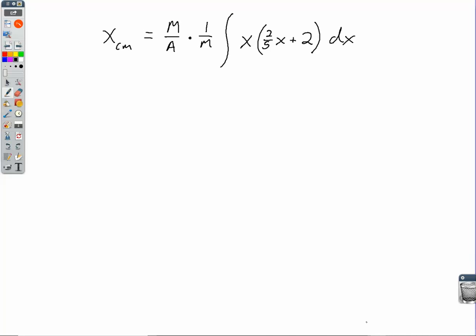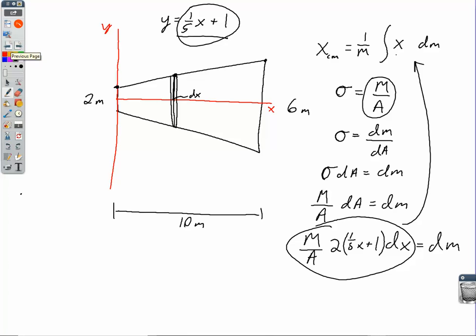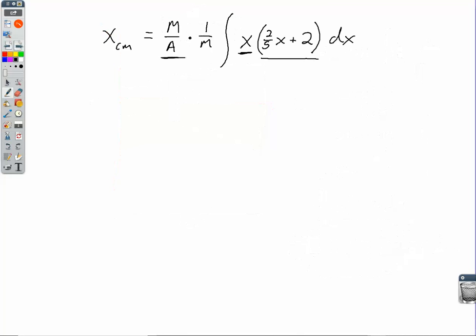So I've replaced dM with that lovely expression. The m over a in the expression I've put out front of the integral because there's no x's in there. I don't have to worry about any integration. I have distributed the 2 through my 1 fifth x plus 1 linear function. And remember that there was still an x out front because it was x dM. So that x comes from the very original equation right here. And then I've multiplied by the dx on the end.